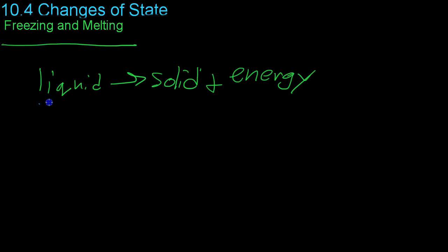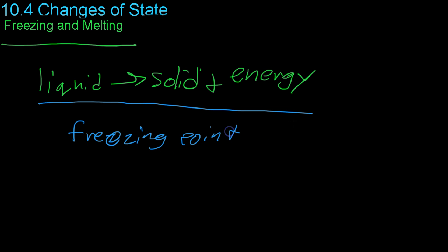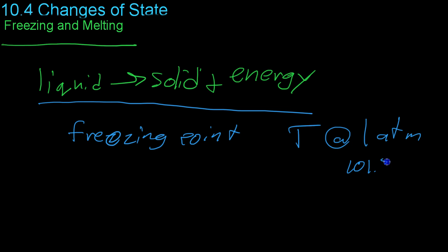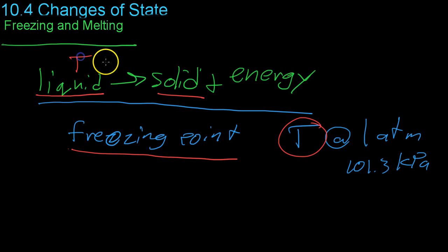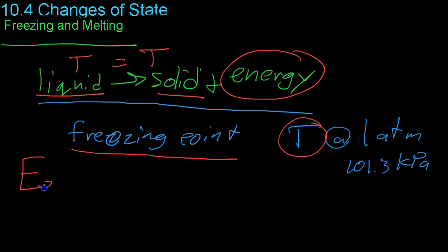For each substance, freezing happens at a specified freezing point — the temperature at normal atmospheric pressure, 1 atm or 101.3 kilopascals, at which liquid can change to solid and begin to release energy. It's important to note that at this freezing point, the temperature of both the solid and the liquid is the same. However, the energy that is lost was potential energy stored in intermolecular bonds between the liquid molecules, and that is released as heat to the environment.